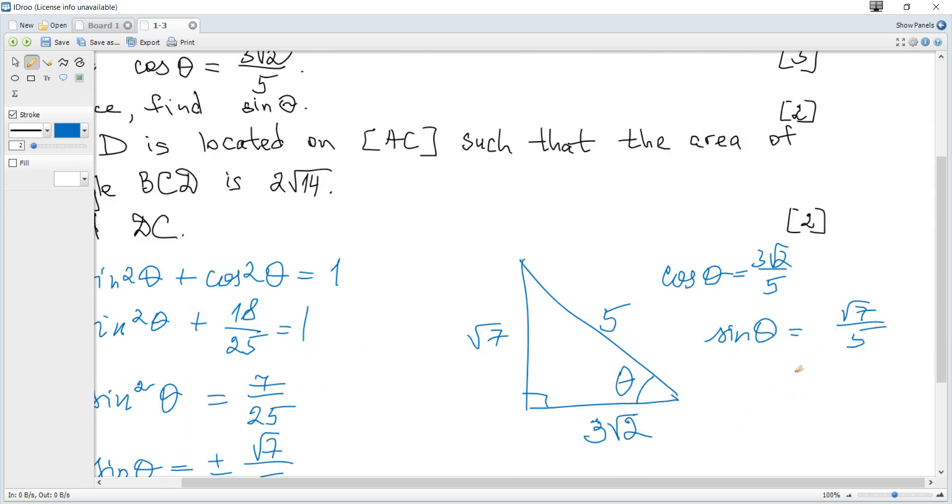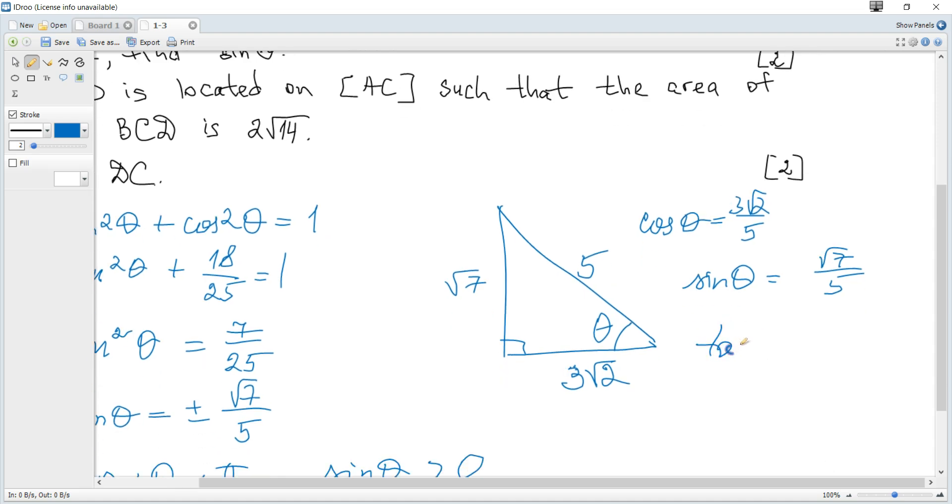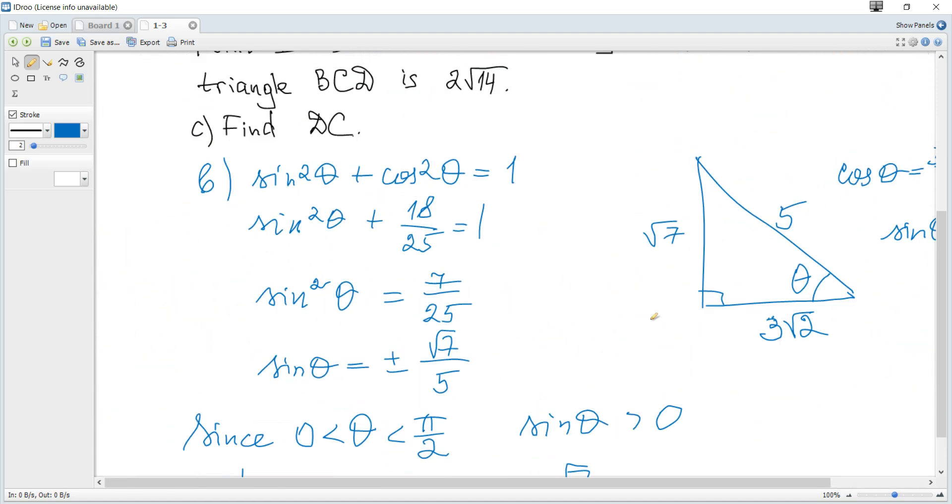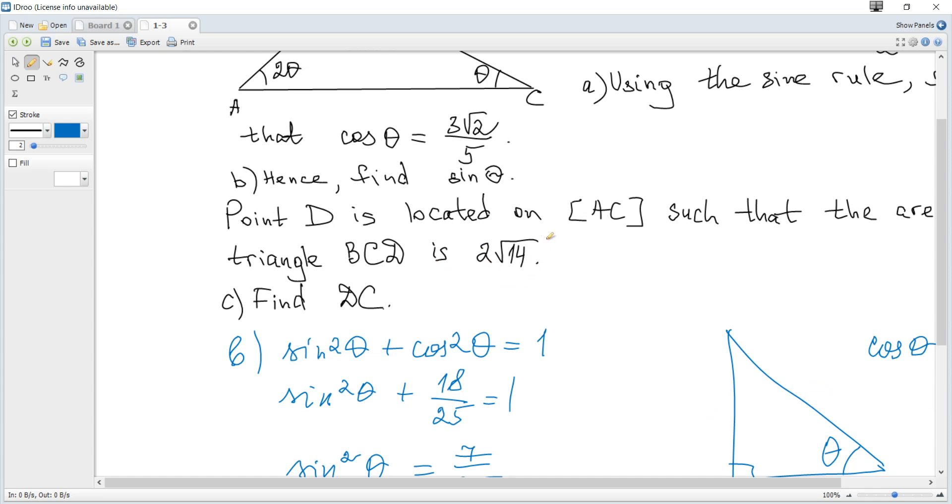So it's positive—it's plus. You can see that we can also find the value of tangent: it's opposite over adjacent, which is root 7 over 3 times root 2, and it's also plus because it's the first quadrant. So sine is root 7 over 5.